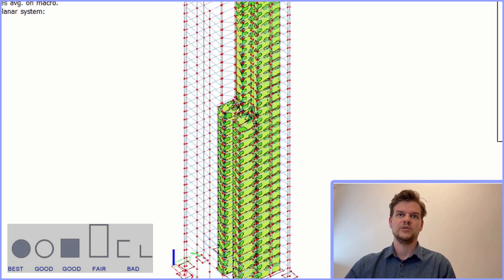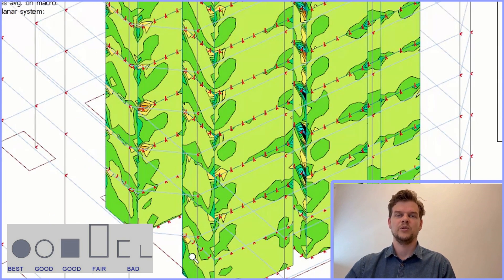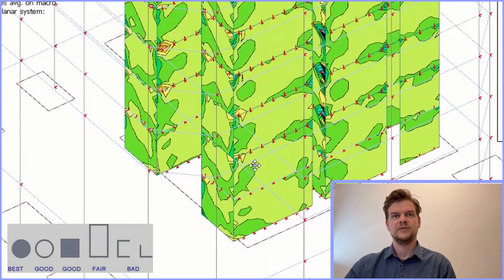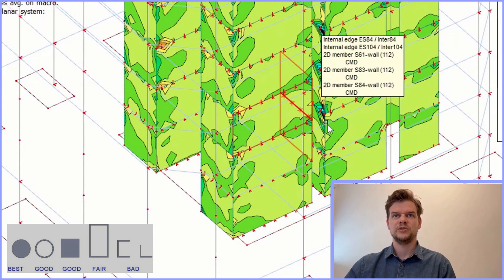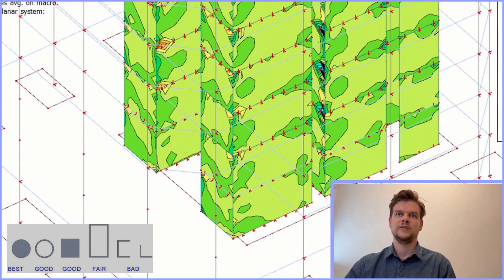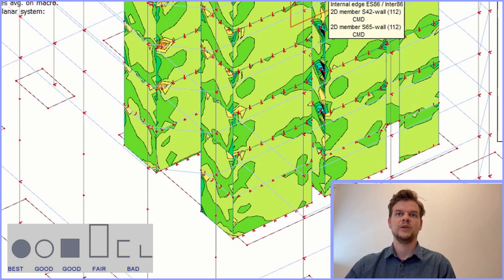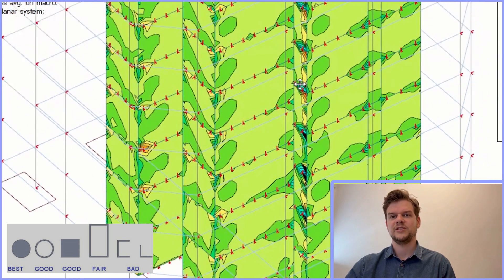If we take a closer look at the torsional forces in the skyscraper, we can now see more locally how they behave along the connection between the floors and the core. The torsional moments are highest near the base of the building, and they gradually decrease as we go up.